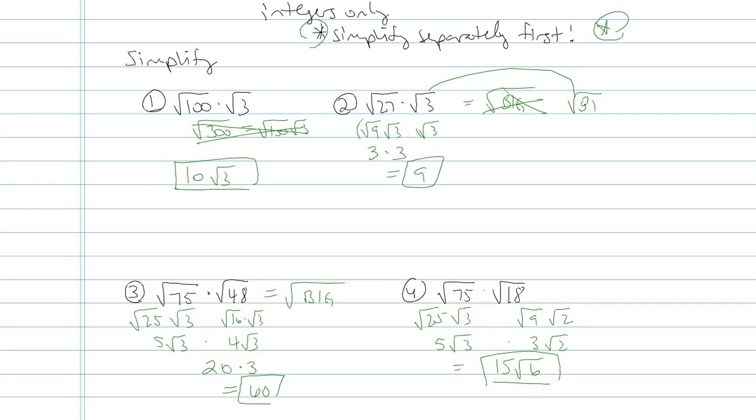But often times, if you have a number like this, whatever the heck that is, 75 times 48, I don't want to deal with that number. I'm going to simplify each radical first. That's my tip for you here.